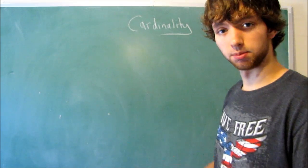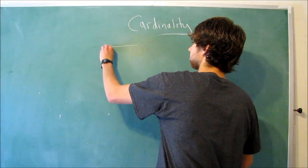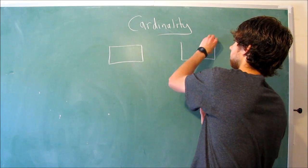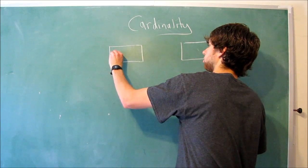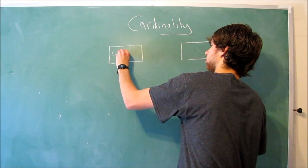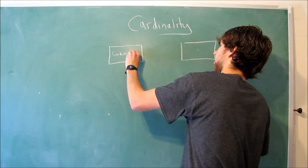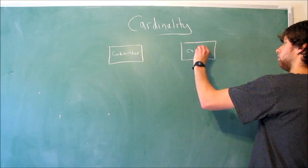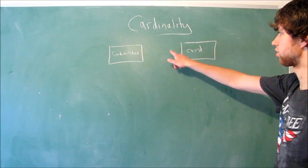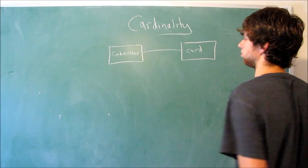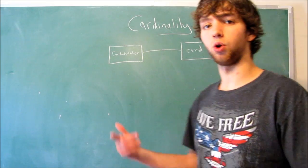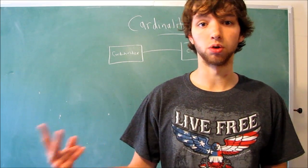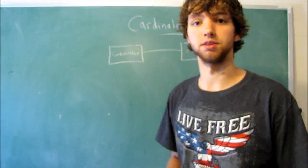I'll draw those tables out just so you can see this — not real big, just so you see how the connection works. So we have the card holder, and then over here we have the card, and there's some kind of relationship between these two tables. Now, the only two possibilities for cardinality are one or many, obviously for both sides.